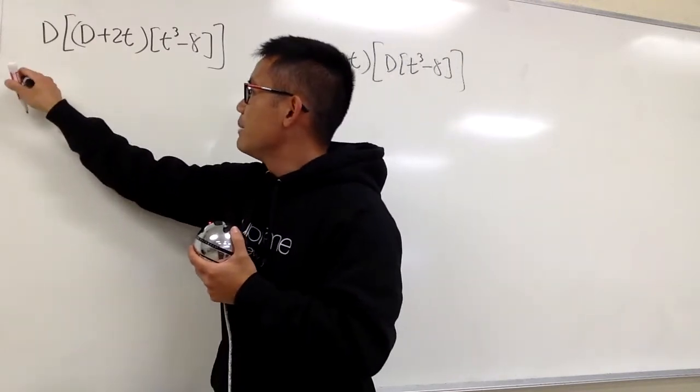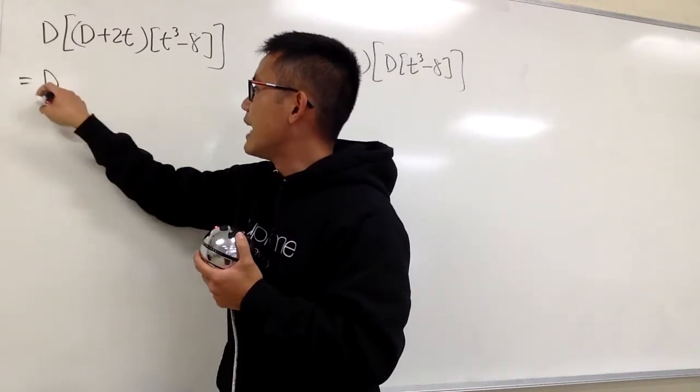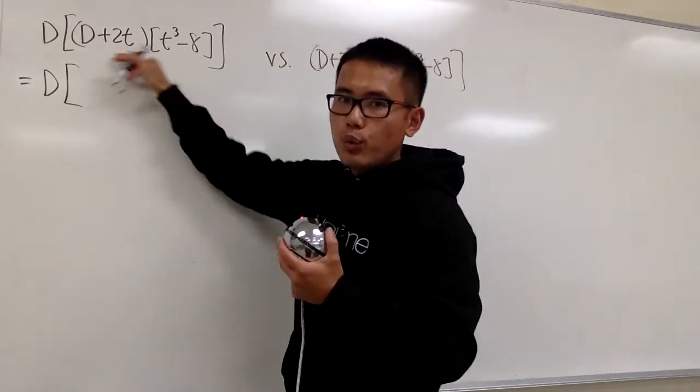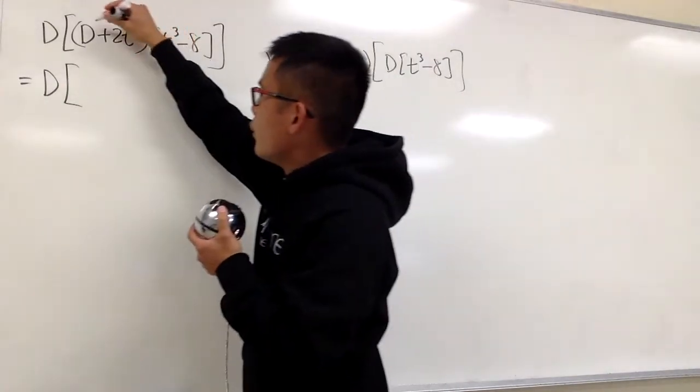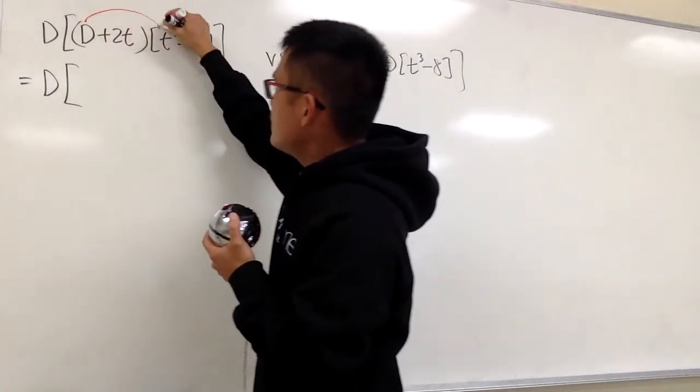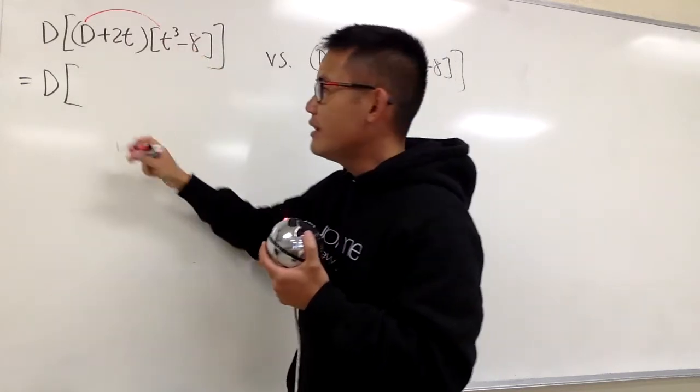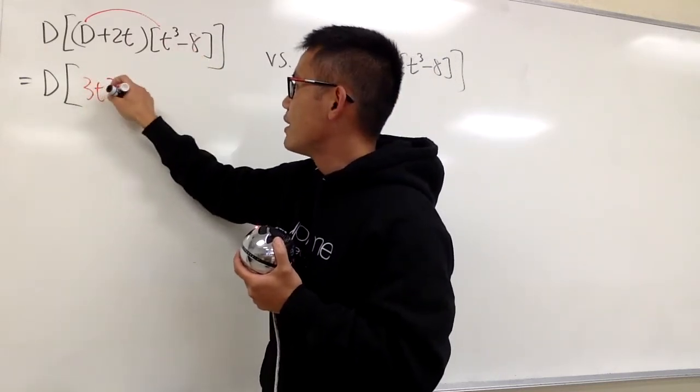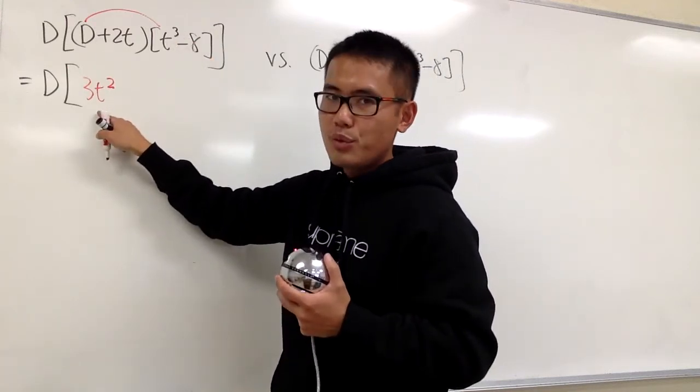Let me first write down the D on the outside and put down the bracket. We have to work the inside first. We're going to first differentiate T to the third power, and we end up with 3T squared. The derivative of T to the third power is 3T squared.